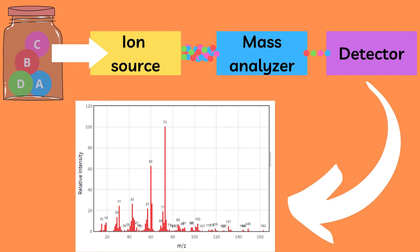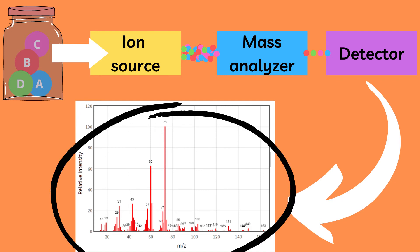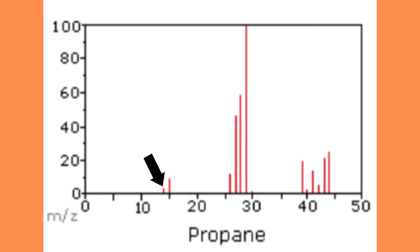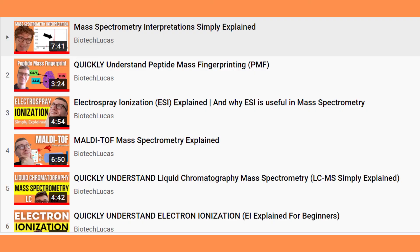Finally, the results are displayed in a so-called mass spectrograph. The basic idea is that the different subcomponents of the sample are displayed based on their size in atomic units as well as how much of each subcomponent exists in relation to each other. If we look at the mass spectrograph displayed here, the bar furthest to the left displays the smallest component, the bar furthest to the right displays the largest, and this bar here indicates which subcomponent there is most of. How to interpret this graph is also covered in greater detail in the playlist mentioned earlier.